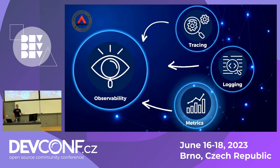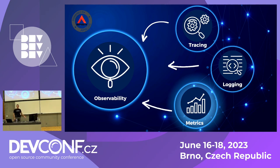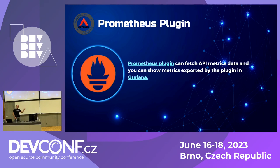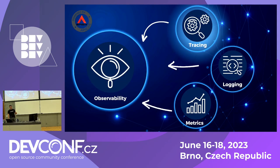Next is metrics — measurements of data over time. You can use metrics to understand what happened over time, aggregate data for distributed systems like Elasticsearch, and set up alerts to take action. With APISIX, you can use the Prometheus plugin to collect metrics, and I'll show in Grafana how you can visually see them.